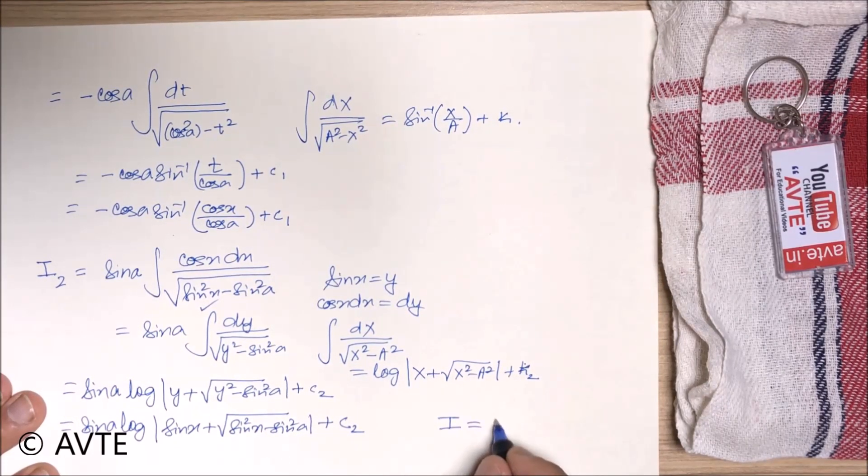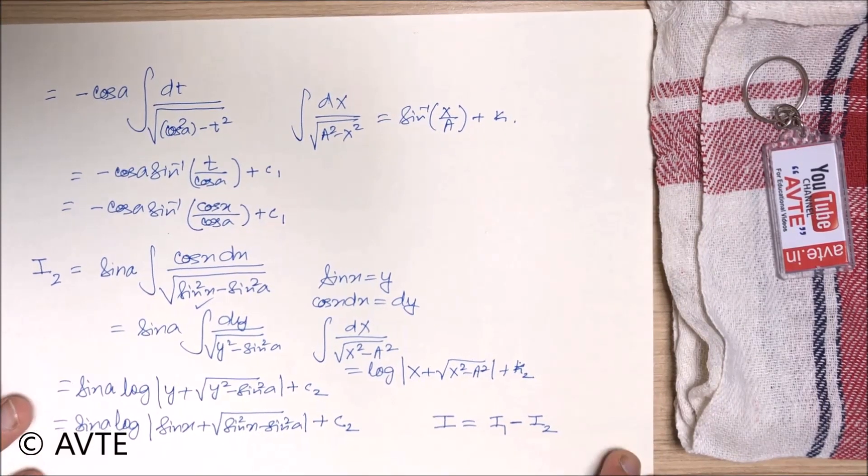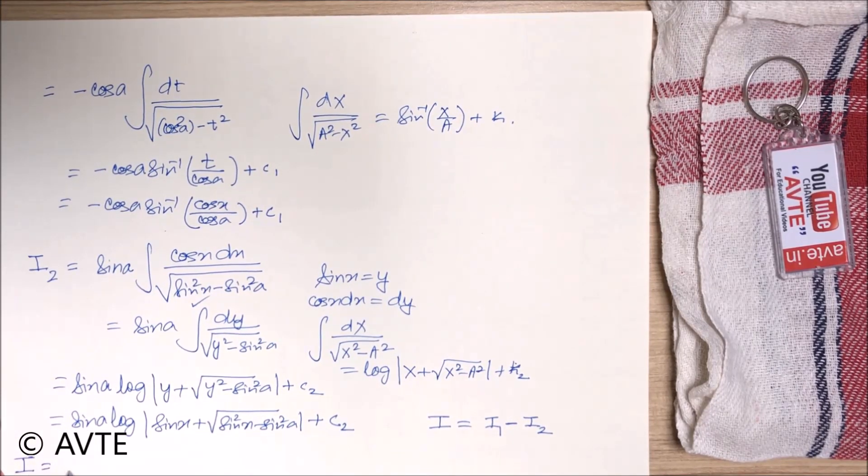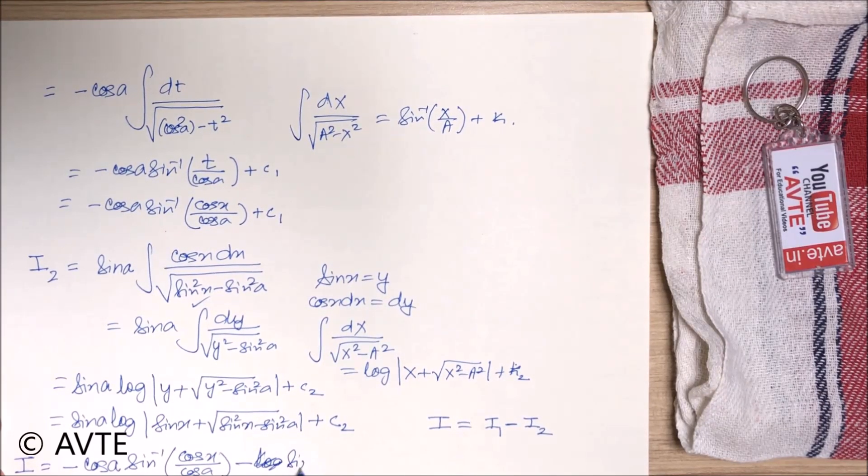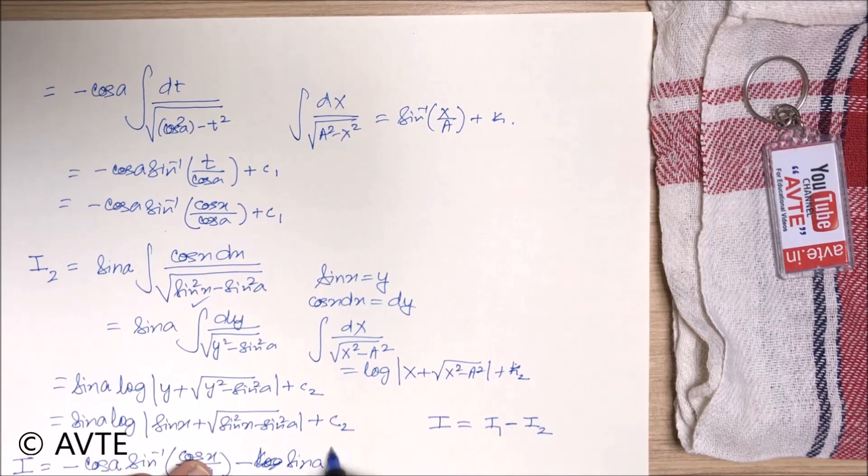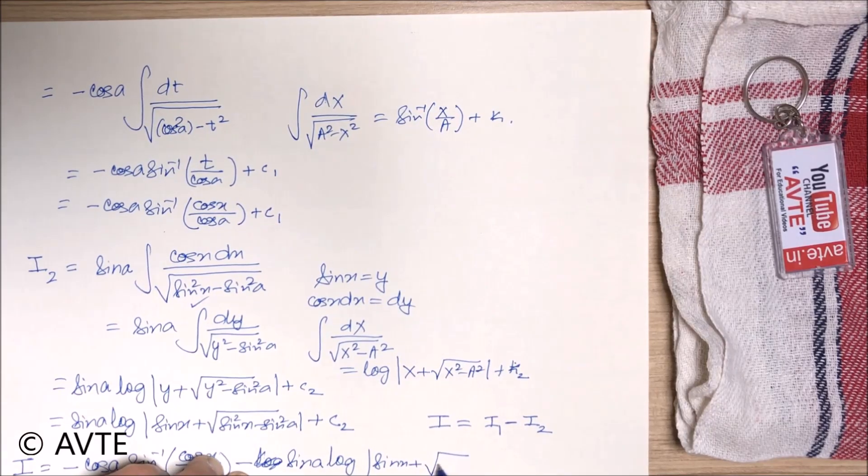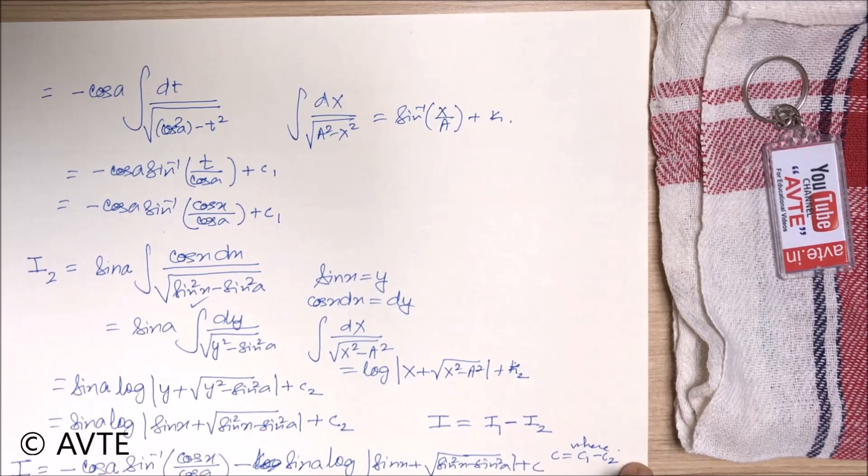And the final answer will be i equals i1 minus i2. So the answer to this question is i equals minus cos a sin inverse of cos x over cos a minus times of sin a log mod sin x plus under root of sin square x minus sin square a plus c, where c is c1 minus c2. So you can solve this question.